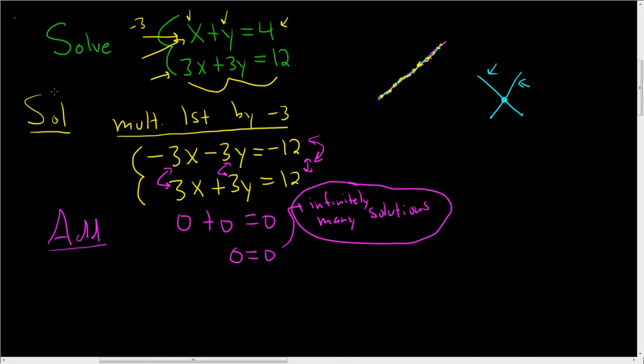Let's actually go further and write down those infinitely many solutions. You pick an equation—let's pick this one because it's easier. So x plus y equals four, and we solve for one of the variables. It doesn't matter which one; I'll solve for y.